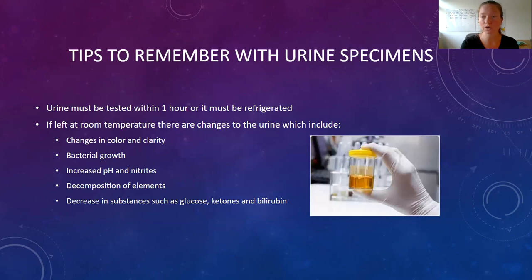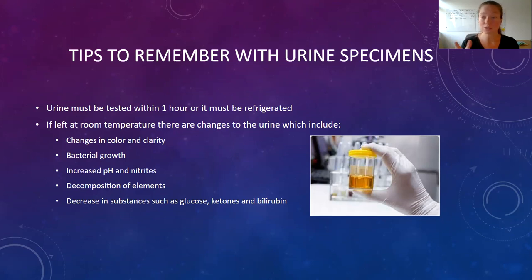If urine cannot be tested within one hour, it needs to be refrigerated. If left at room temperature for over an hour, a few things can change: the color and clarity, bacterial growth can increase, pH and nitrites can change, and cellular elements might change from their true level. That might include glucose, bilirubin, or ketones — if they were initially present, over time they're going to decrease and not give us a clear picture.